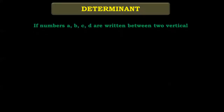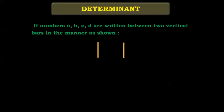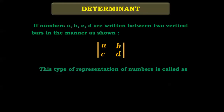We will start with determinants. If the numbers A, B, C, D are written between two vertical bars in the manner as shown in this figure — that means between two vertical bars the numbers A, B, C, and D — then this type of representation of numbers is called a determinant of order 2.